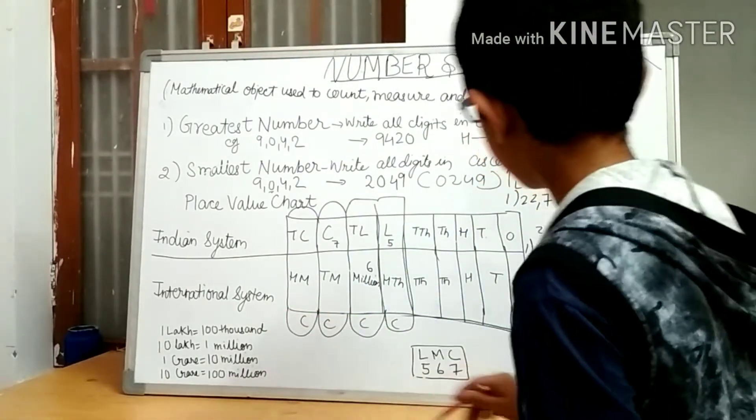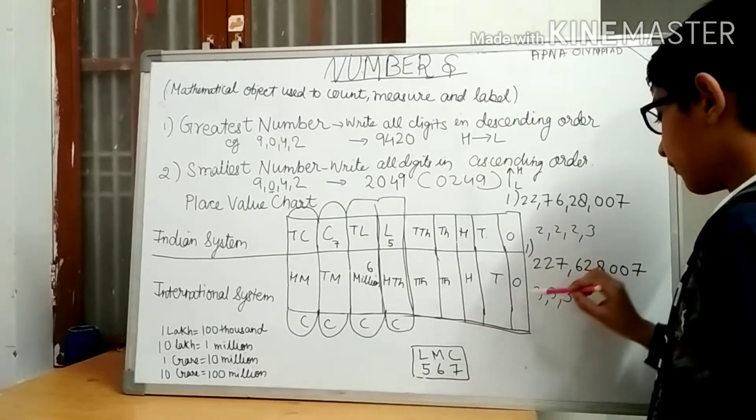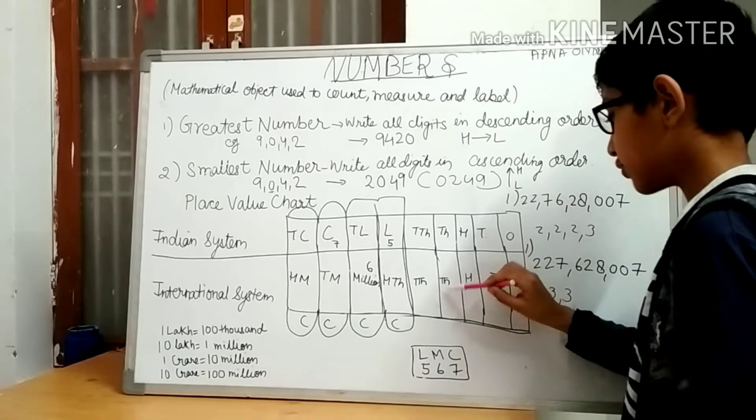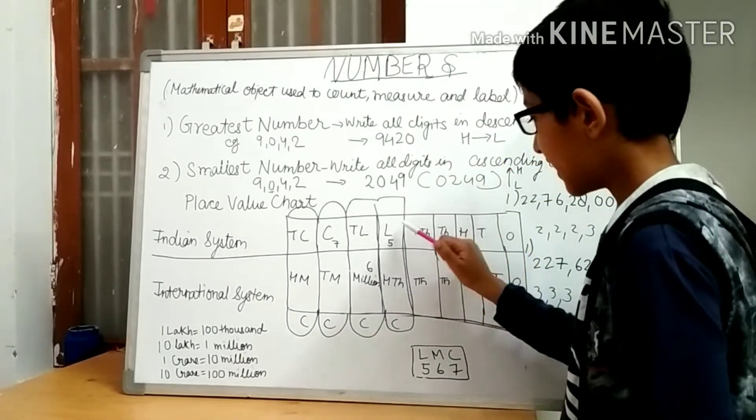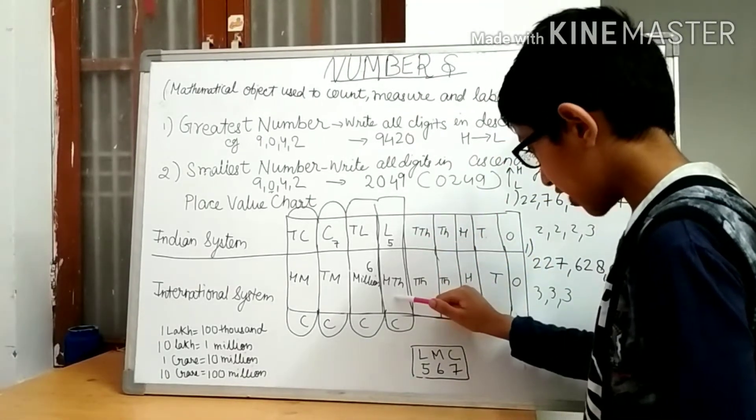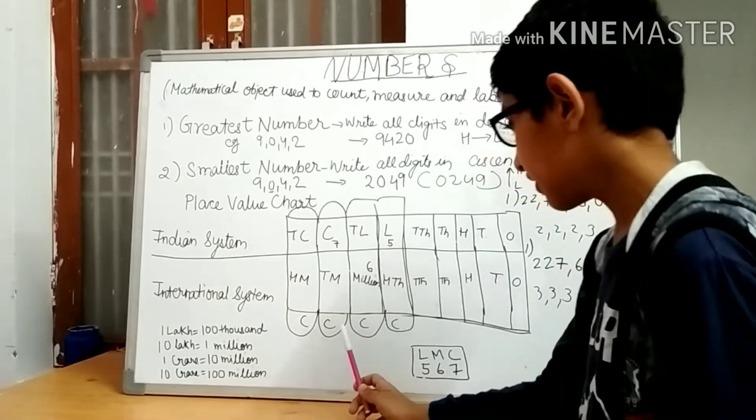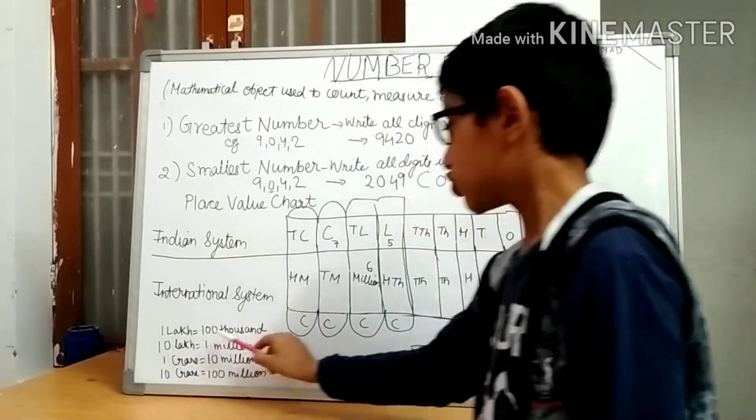In international system we have 1, 10, 100, 1000, 10,000, and in place of lakhs we have 100,000. 1 lakh equals 100,000.